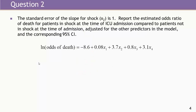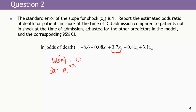The standard error for the slope of shock is 1. I wanted you to report the estimated odds ratio of death for patients in shock at the time of ICU admission compared to patients not in shock, adjusted for the other predictors, and the corresponding confidence interval. The slope of shock gives us the adjusted log odds ratio — the difference in the log odds of death for people in shock versus not, all other things being the same. That log odds ratio is 3.7, and exponentiating gives an estimated odds ratio of e to the 3.7, approximately 40. After adjusting for age, malnutrition, and alcohol usage, those patients in shock had 40 times the odds of dying in the ICU compared to patients not in shock.